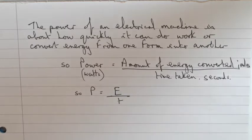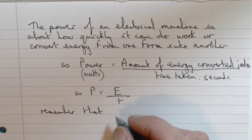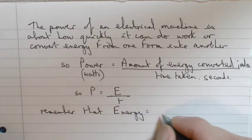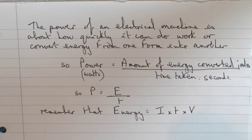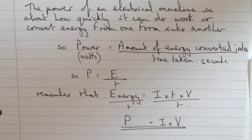Now remember that the energy of an electrical system is current times time times voltage. So if we simply divide both sides of this equation by time, we have power on the left equals current times voltage on the right. Power, remember, is measured in watts.